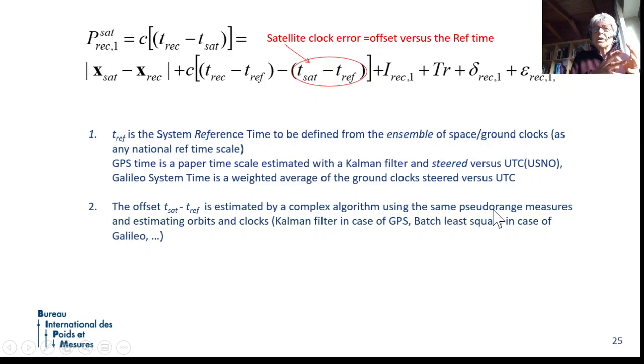In the case of the user, the unknowns are the user coordinate and clock offset, and the satellite positions are known. If you are in the control center, this is the other way around. You know the position of the monitor station, you know the position of the control center, and you use the same pseudo-range equation to estimate the clock offset and the satellite position. So this is again an estimation, a processing tool, which is based in some cases on the Kalman filter, in some cases on least square batches, and so on.